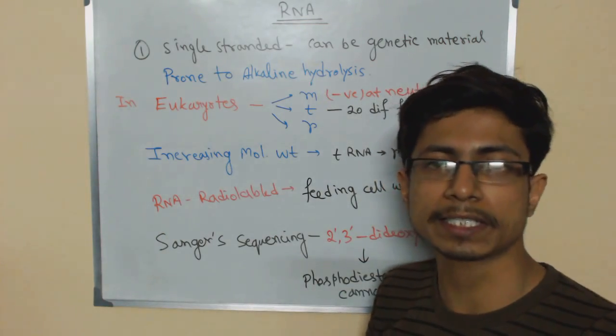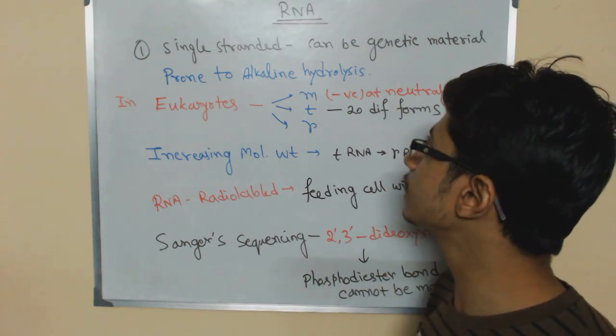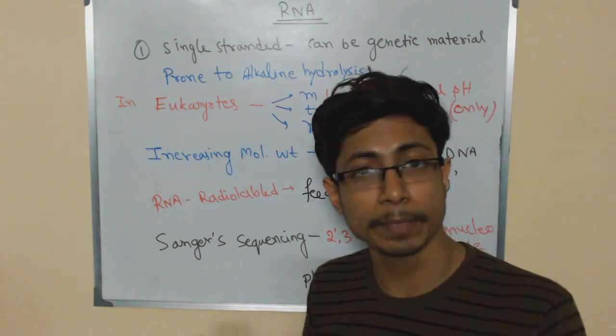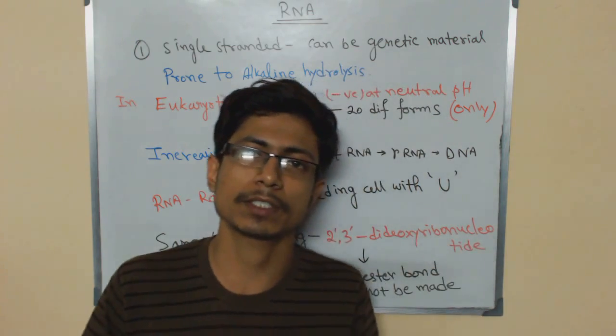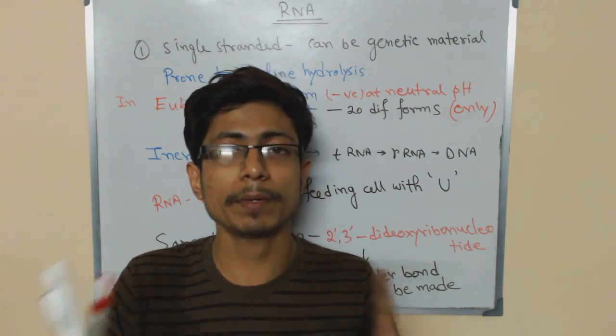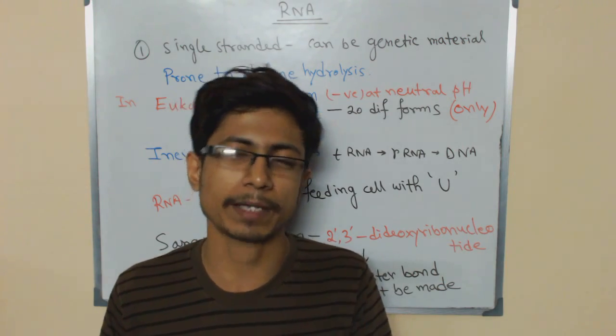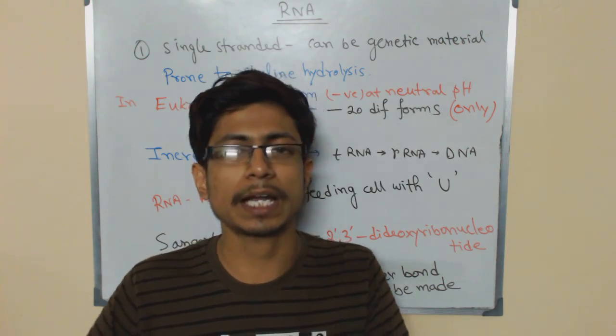It is single-stranded nucleic acid. In this case, single-stranded nucleic acid can be a genetic material. We've seen in case of viruses RNA can be a successful genetic material, but remember, among RNA and DNA, DNA is the best genetic material. If DNA is present, RNA can't be a genetic material. In the absence of DNA, RNA can be genetic material.